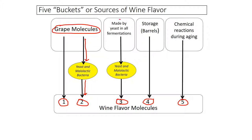Bucket number three are flavors made by yeast in all fermentations. Yeast and malolactic bacteria, because they're living organisms, are going to eat different foods and produce different flavors. Those flavors are dependent on the yeast strain but not necessarily dependent on the molecules that originate in the grapes.